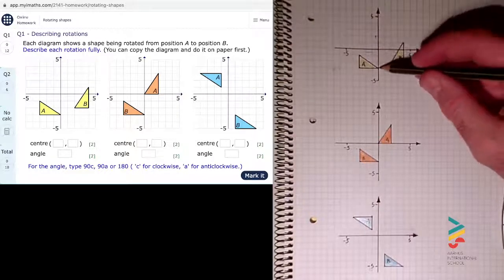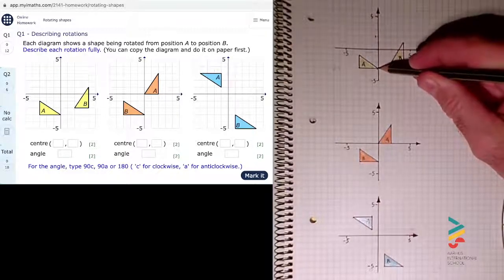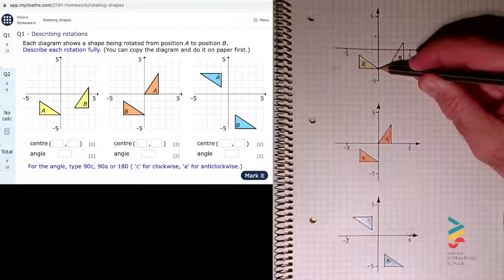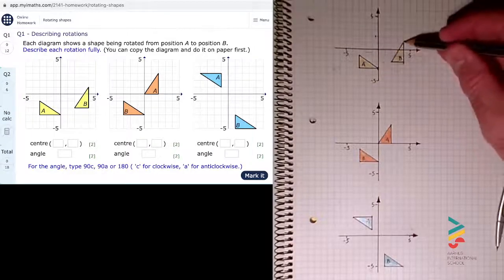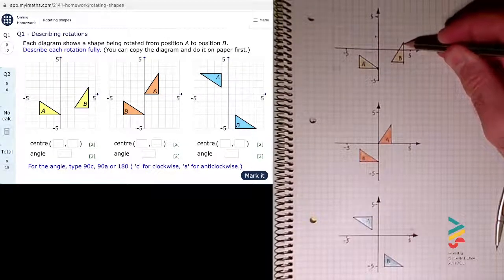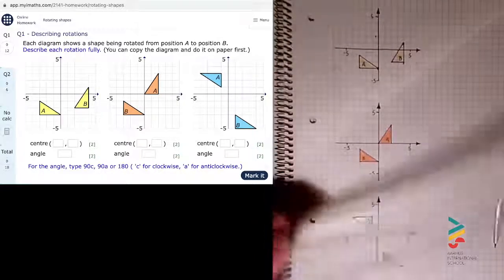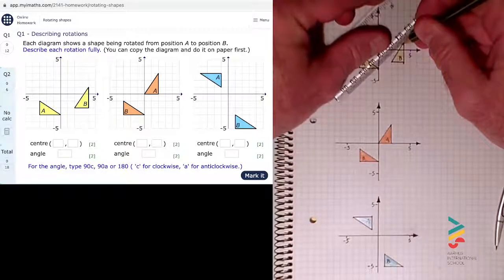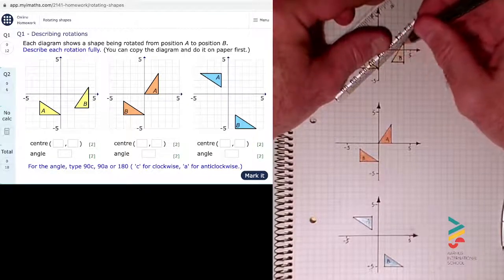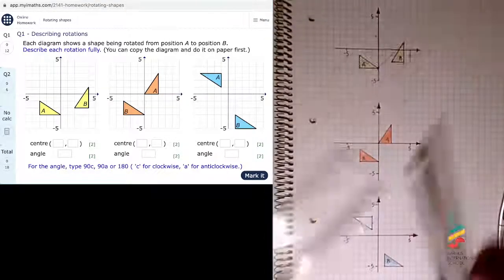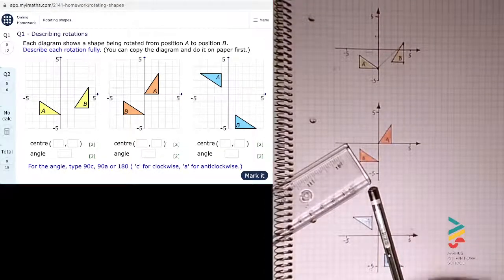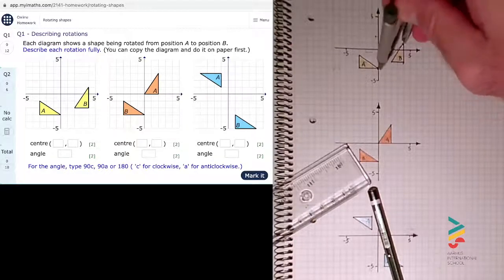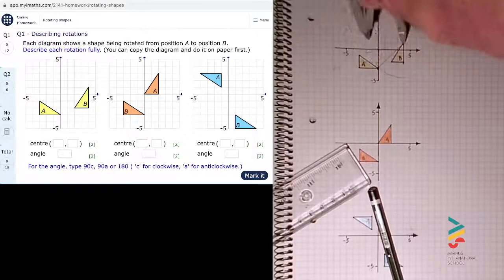I'm going to start off with that point in shape A and identify the corresponding point in shape B, which would be this one up here. I'm going to construct the perpendicular bisector between those two points. So just a little line between them, and then the perpendicular bisector is the line that cuts the line I've just drawn in half at 90 degrees.